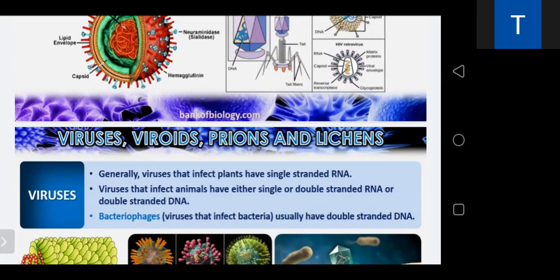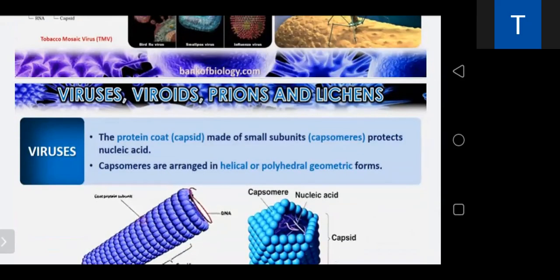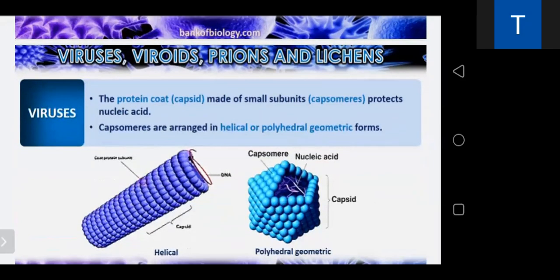Nowadays mutations are being discussed — double mutant, triple mutant — which are mutations in the spikes or outgrowths of the capsid. HIV is a retrovirus; it first makes cDNA and then replicates. The capsid has protein subunits called capsomeres. TMV has 2130 capsomeres arranged helically or in geometric forms. Most animal viruses have double-stranded DNA as genetic material, while the majority of plant viruses have single-stranded RNA.